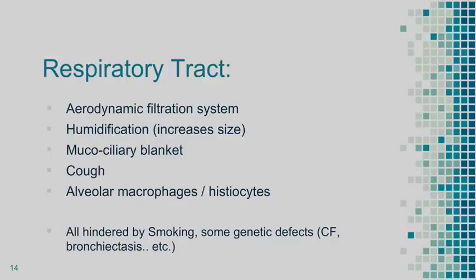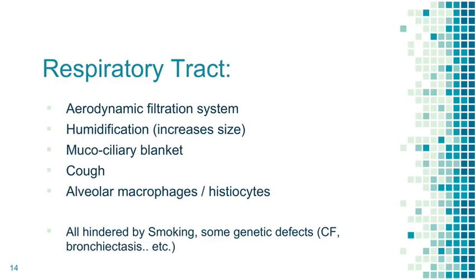Respiratory tract: the aerodynamics of breathing make it hard for larger pathogens to reach the lower respiratory tract. Humidification causes some bacteria to increase their size, also making it more difficult. The mucociliary blanket, cough, sneezing, and alveolar macrophages and histiocytes are key. All of these mechanisms are hindered by smoking and by genetic issues like bronchiectasis and cystic fibrosis.